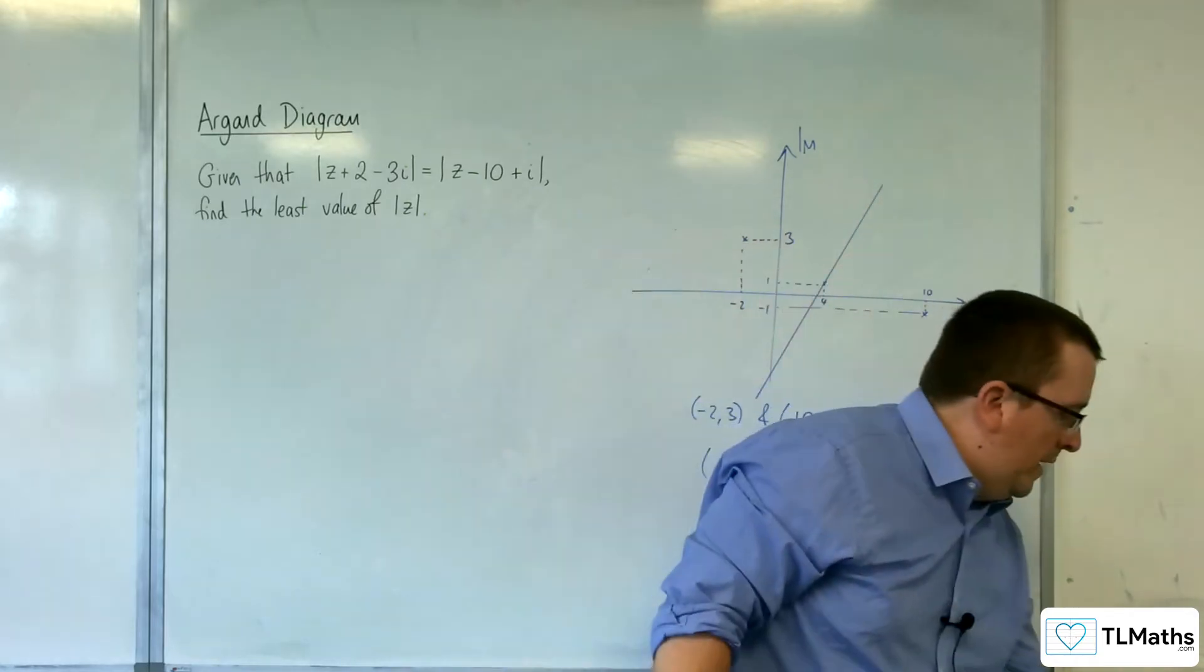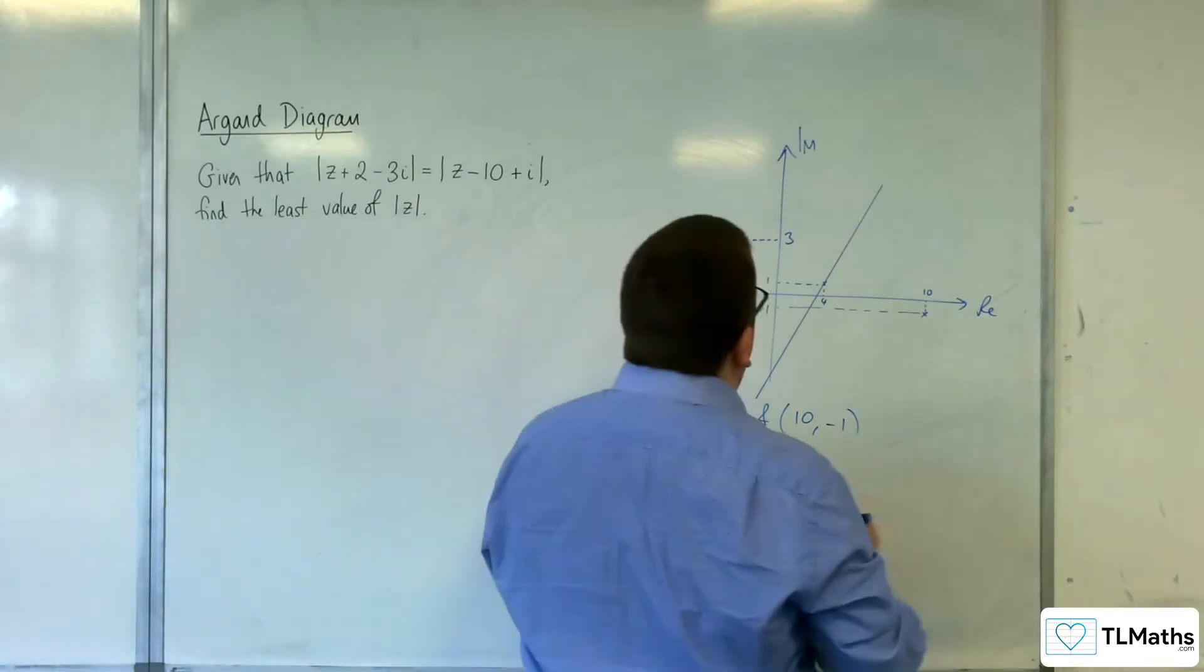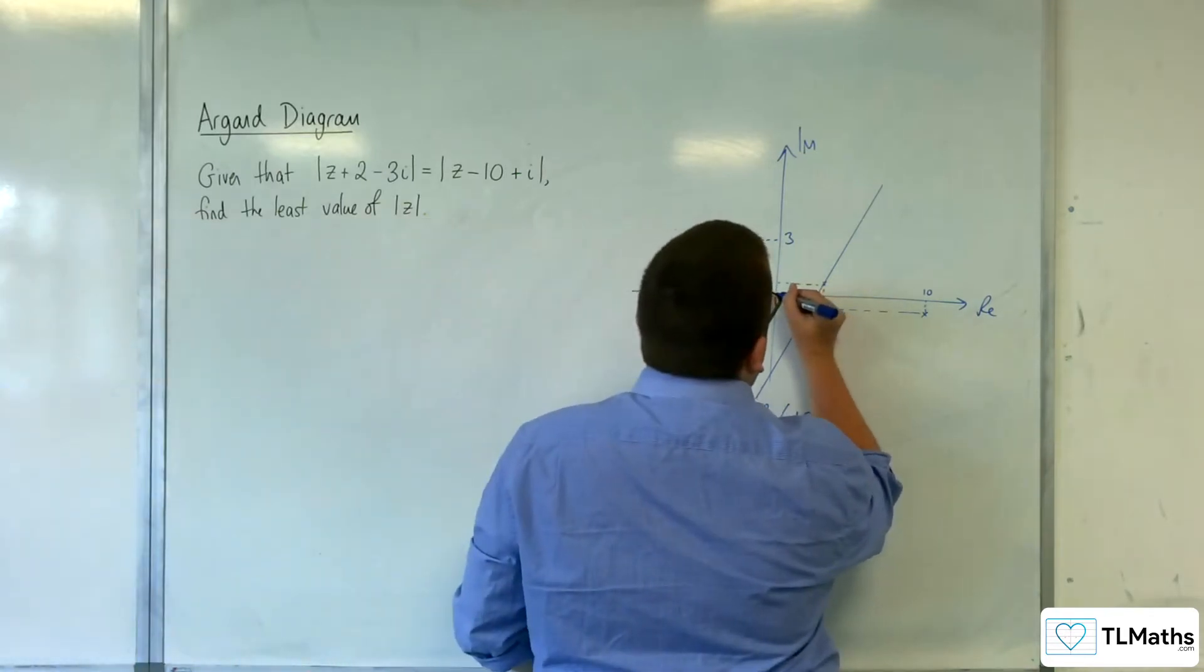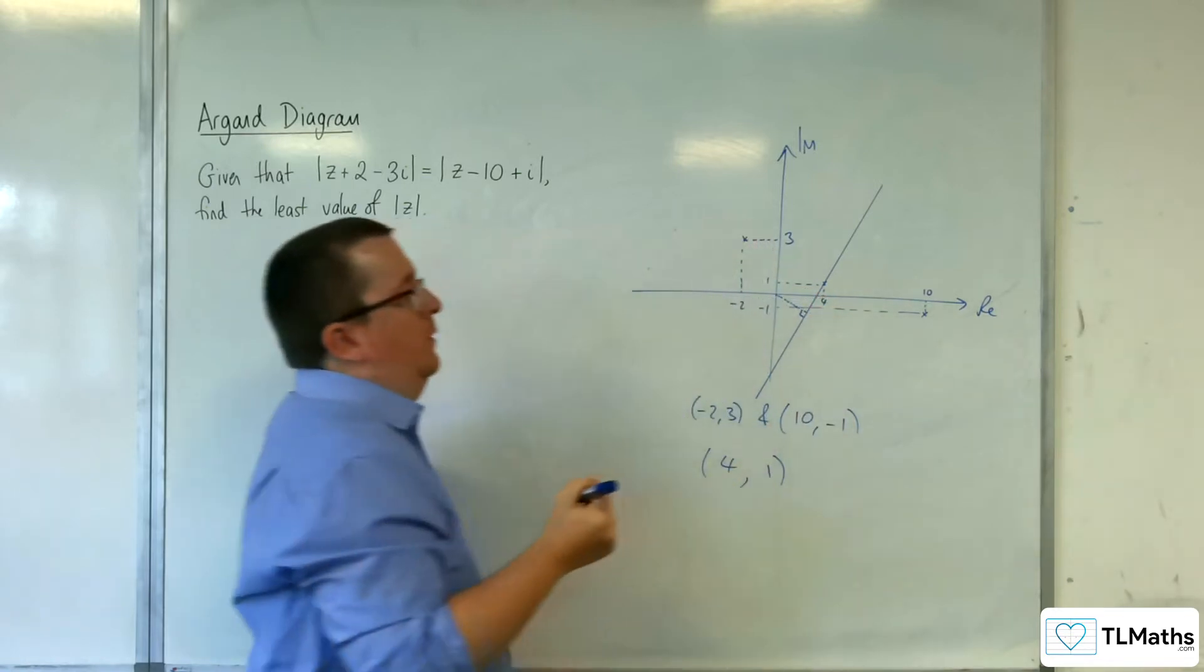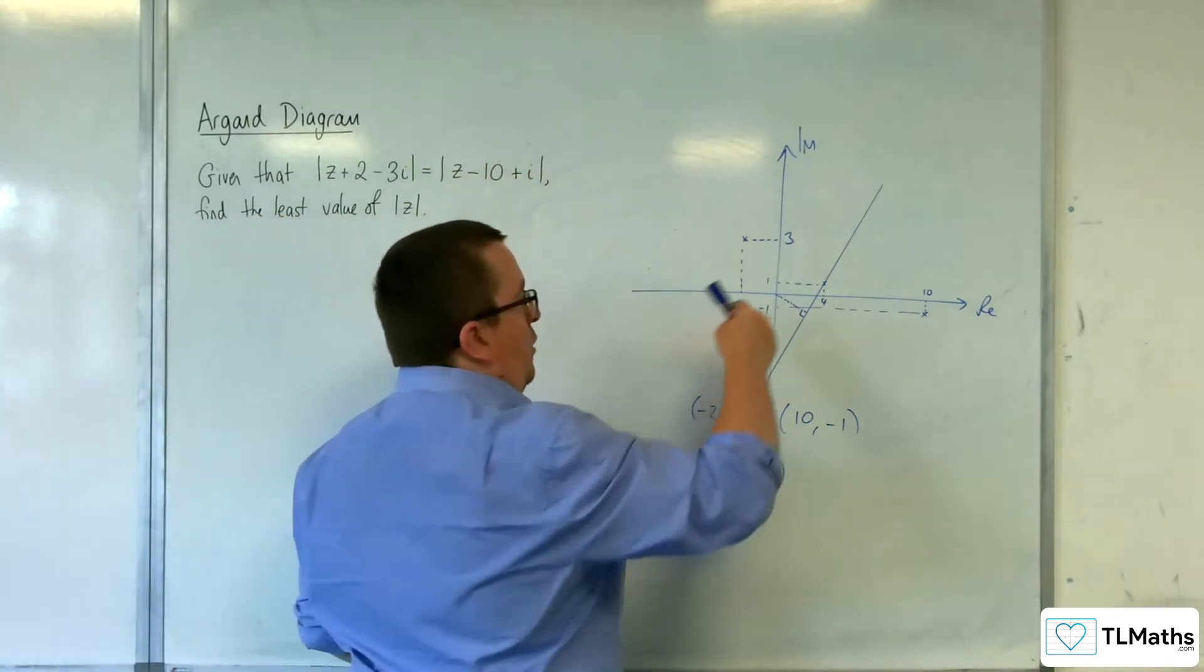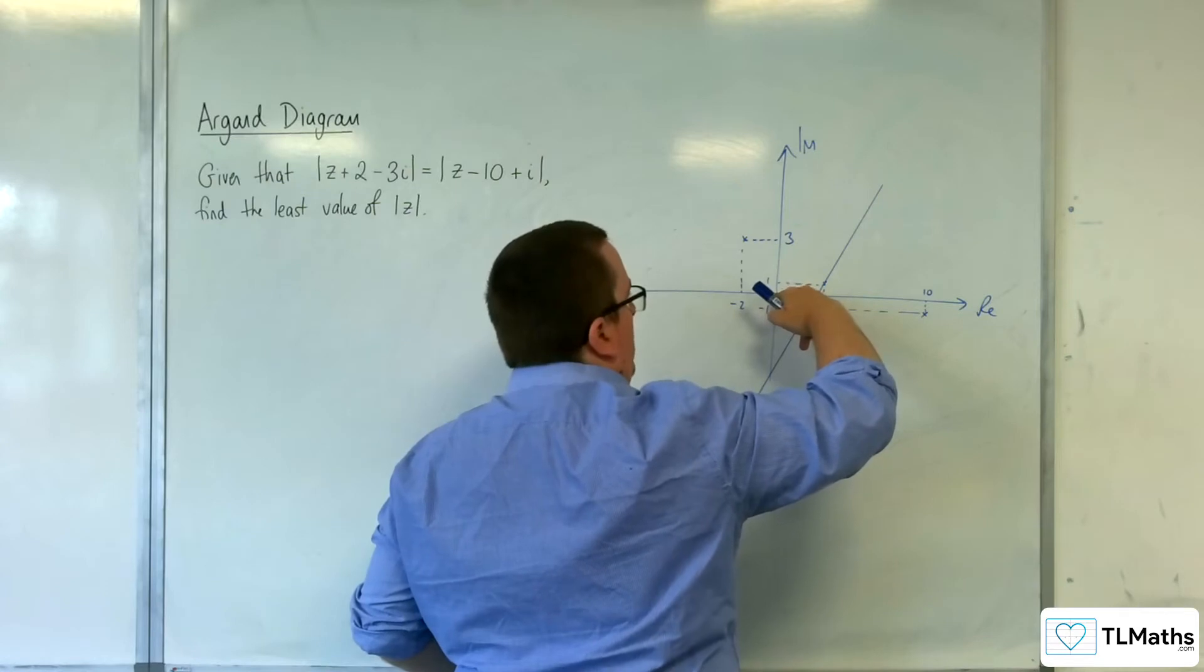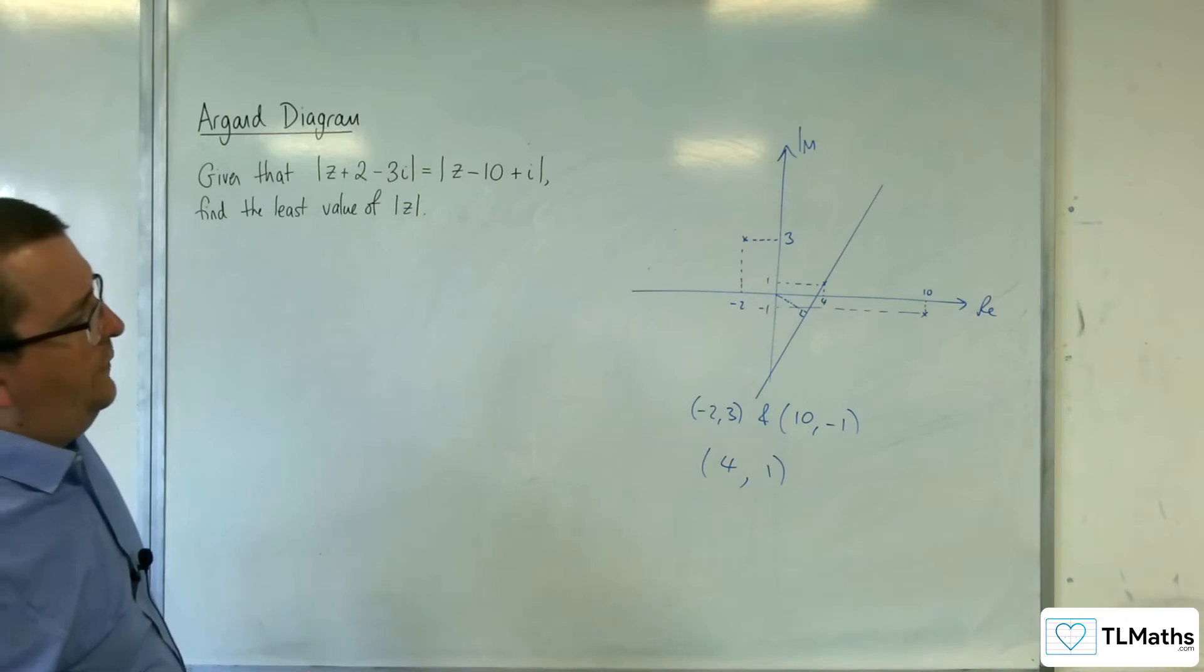Once I've got my line, I'm going to need to work out what the equation of that line is. Because the idea then is to find the least value of mod z. Mod z is talking about the distance from the origin. So what is the least value that z can be from the origin? You've got all these choices here as you run along the line, but the least one is going to be the one that makes a perpendicular there at right angles.